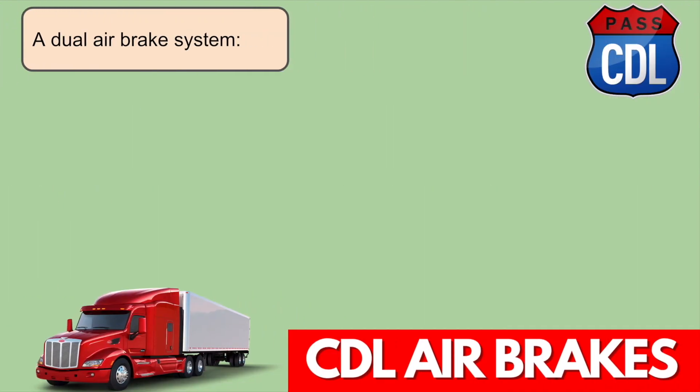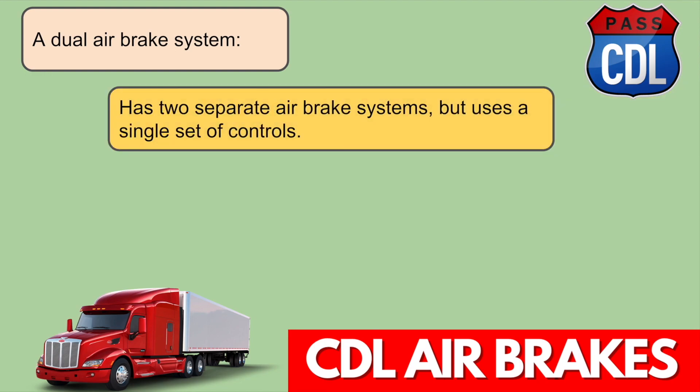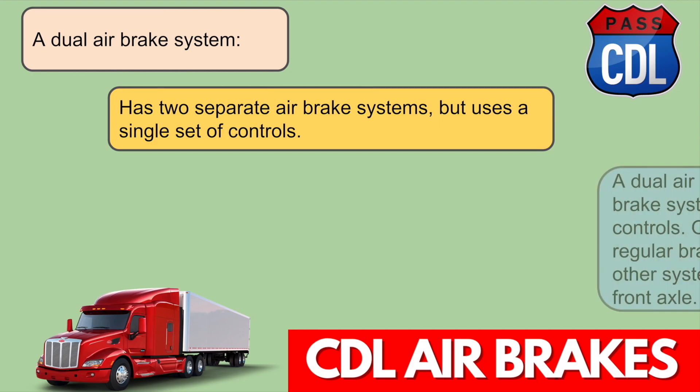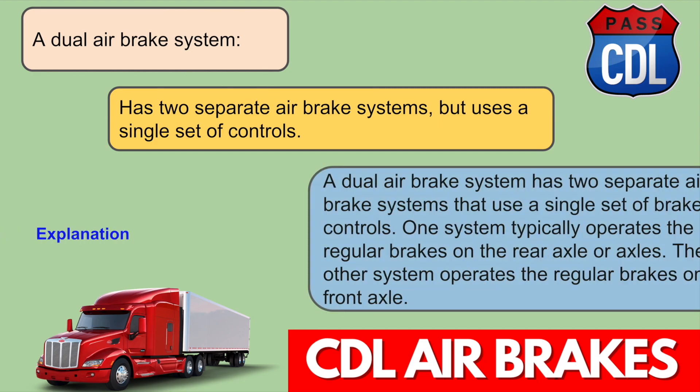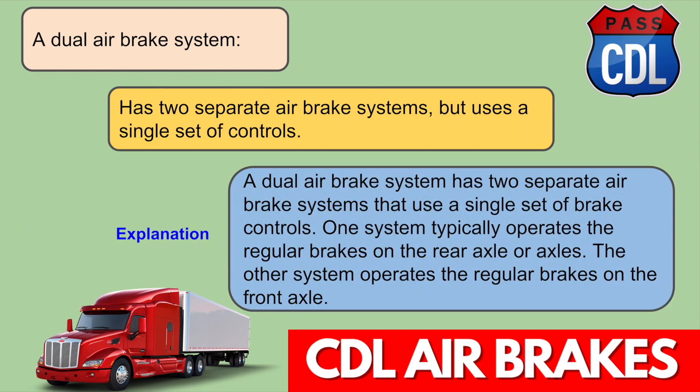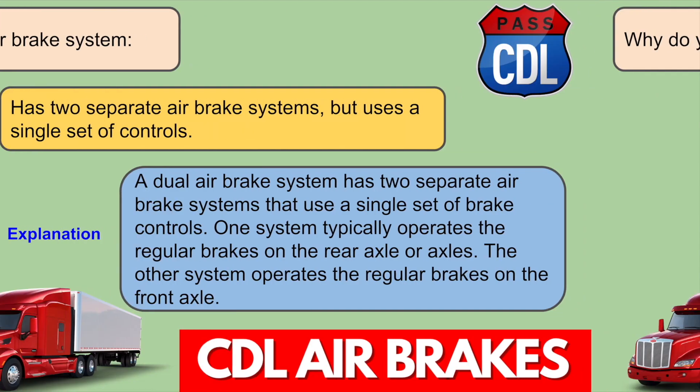A dual air brake system has two separate air brake systems but uses a single set of controls. One system typically operates the regular brakes on the rear axle or axles. The other system operates the regular brakes on the front axle.